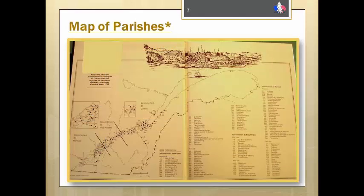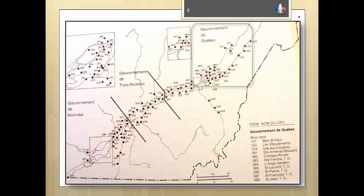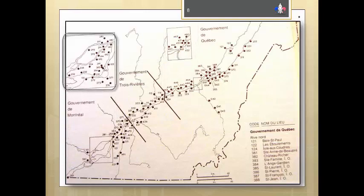Remember that there are a couple of useful tools on the front and back inside covers. We saw how the inside back cover has a list of parishes and the volumes in which they appear. The inside front cover of each volume has a map of the parishes, with each parish having the same numerical designation throughout the volumes. This map also shows the parishes divided up between the three governmental divisions of Quebec, Trois-Rivières, and Montreal, with insets for the two congested areas of Quebec and Montreal.